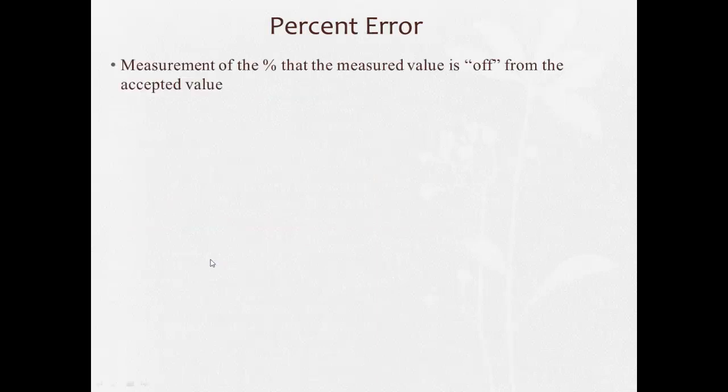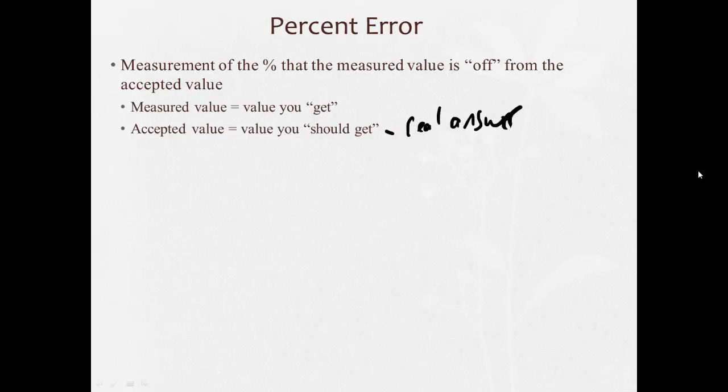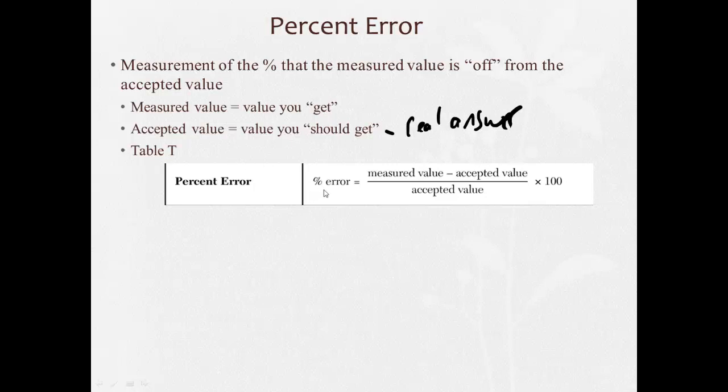And percent error is the measurement of the percentage that the measured value is off from the accepted value. So the measured value is what you get when you measure something. You put it on a scale and figure out how many grams it is. You measure the length of the ruler. The measured value is what you get. The accepted value is what you should get. It's the real answer. And there's a special formula on your reference table, on table T, for percent error. And percent error is equal to measured value minus accepted value divided by the accepted value times 100.